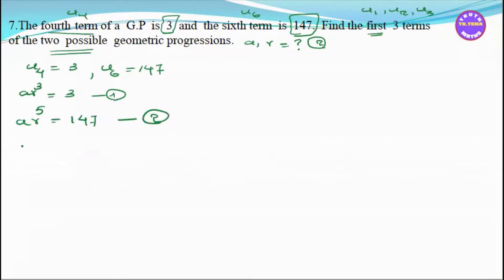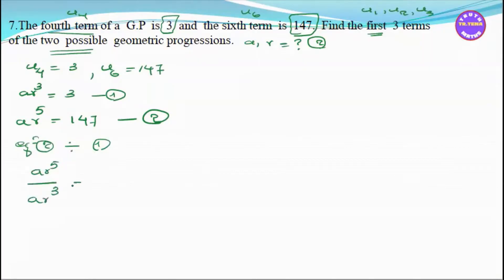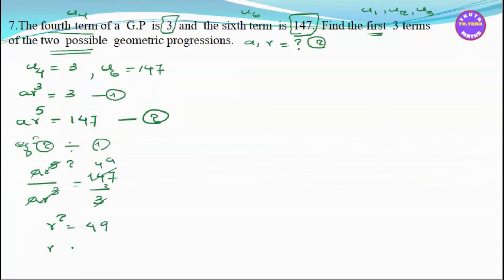Dividing equation 2 by equation 1: (a·r⁵)/(a·r²) = 147/3. This simplifies so that r³ cancels, giving r² = 49.